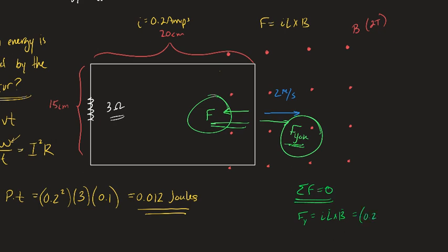0.2 amps. L is the length of the wire so 0.15 meters. And B has to be the size of the magnetic field to Tesla. So 0.6 newtons or 0.06 newtons? I think it's 0.06 newtons. 0.06 newtons.